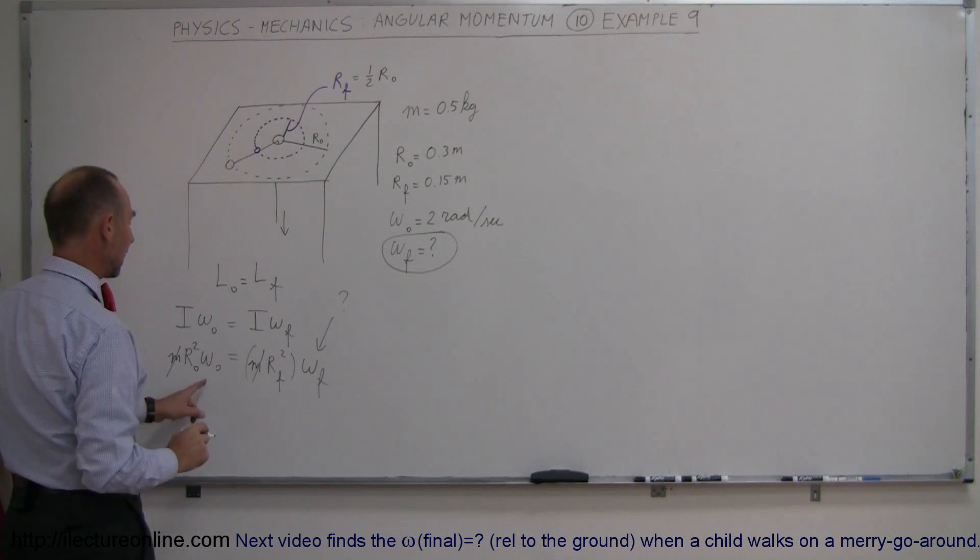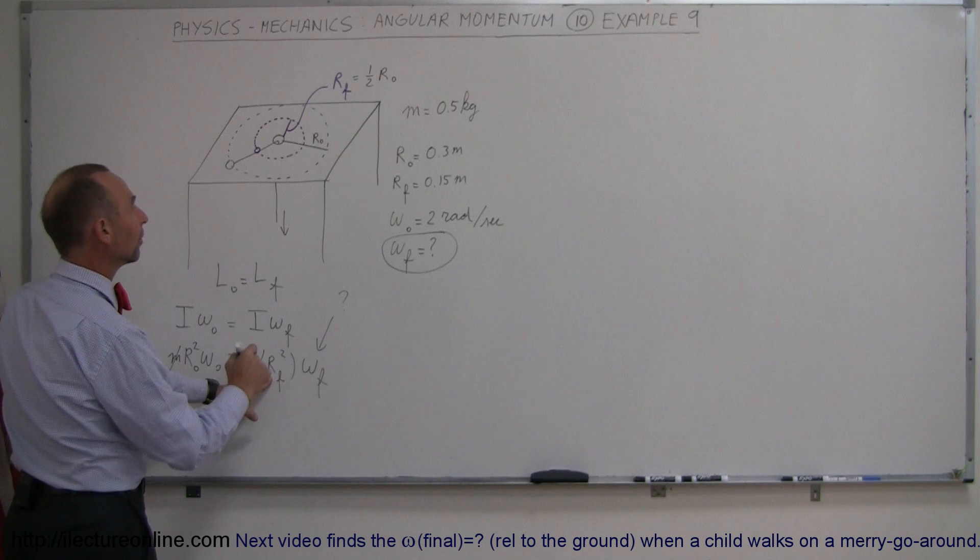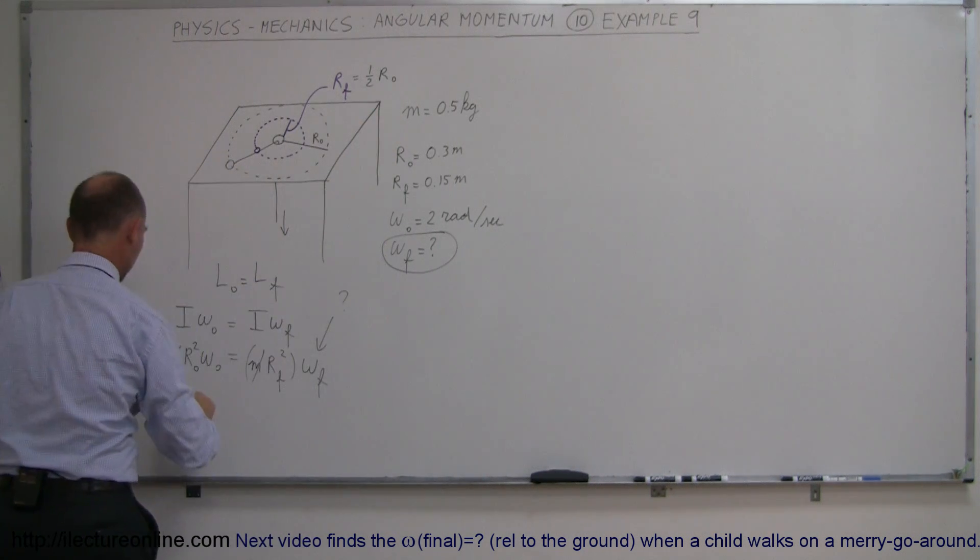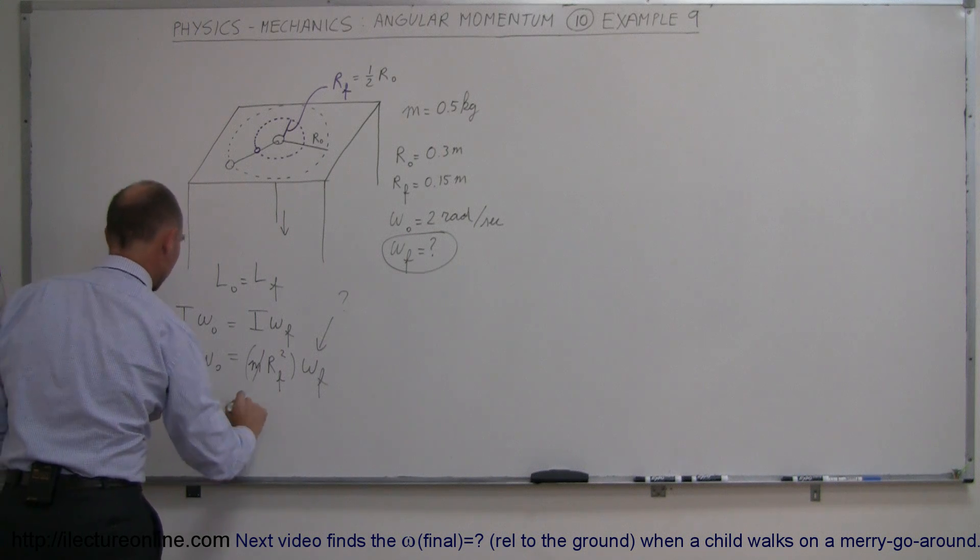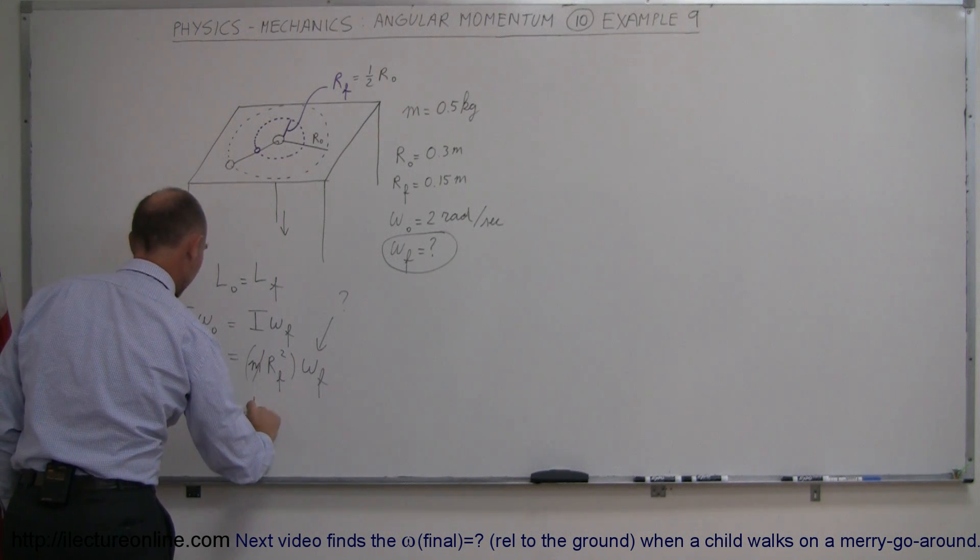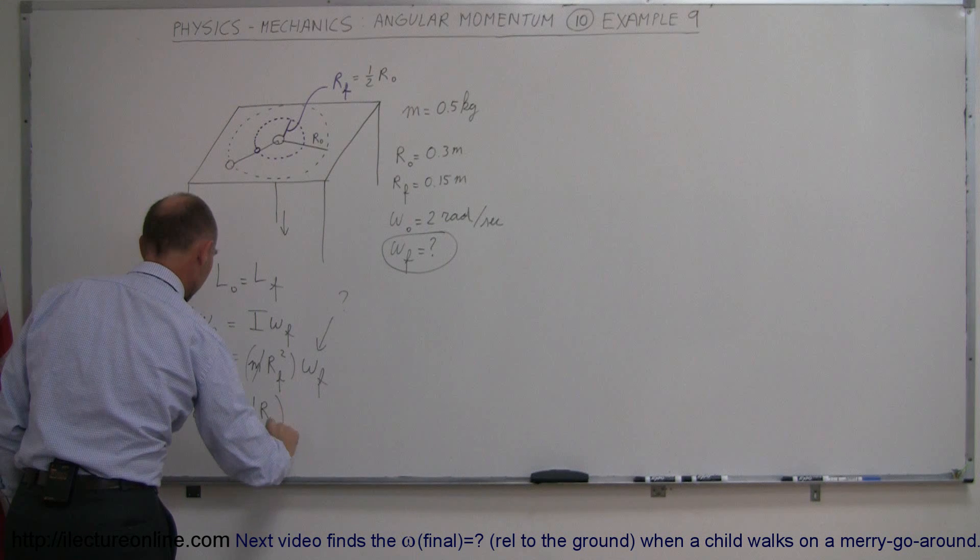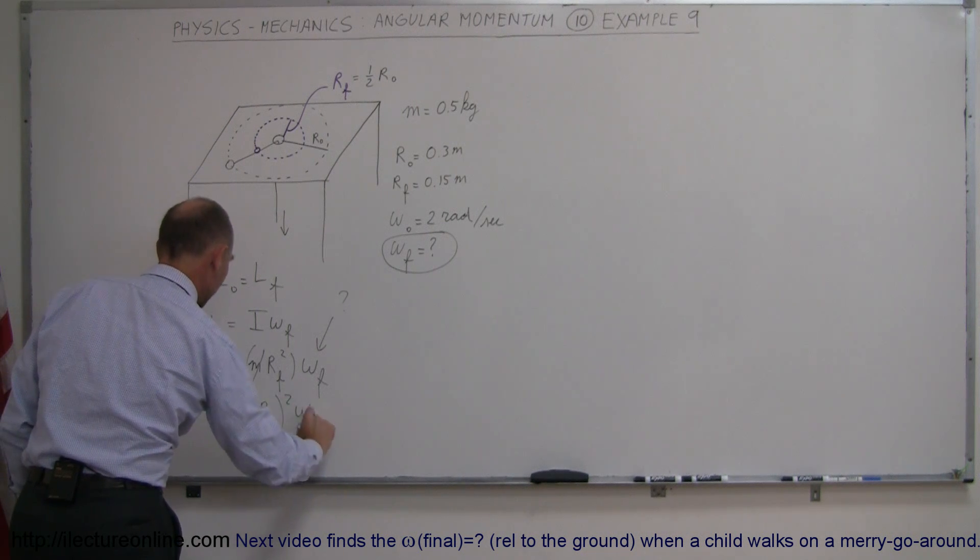Now we can go ahead and replace r final with one half r initial so we have r initial squared times omega initial equals r final which is one half r initial squared times omega final.